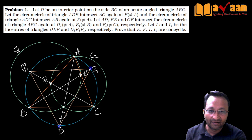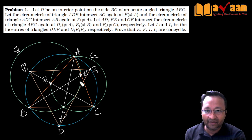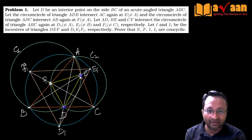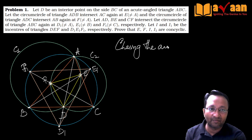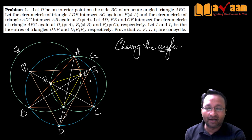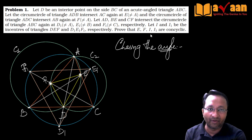This is a question of proving a result, so at least you need to know what has to be proved. Let me also draw triangle DEF so we don't lose sight of it. We have to prove that E, F, I, I1 are concyclic. So if I can show that EF subtends the same angle at both I and I1 — the incenters of triangles DEF and D1E1F1 respectively — we are done. Let's start chasing angles.